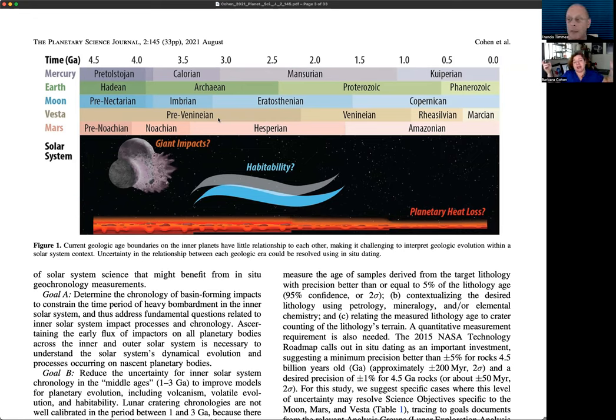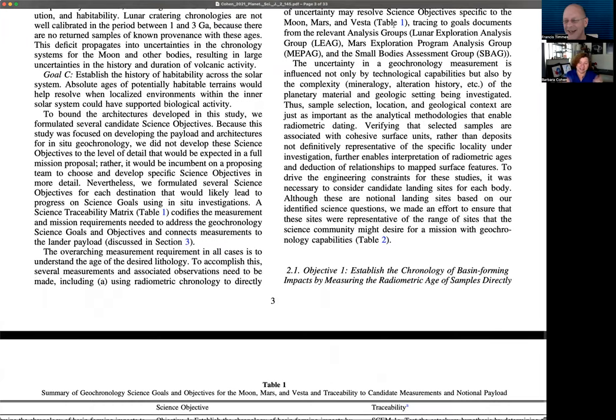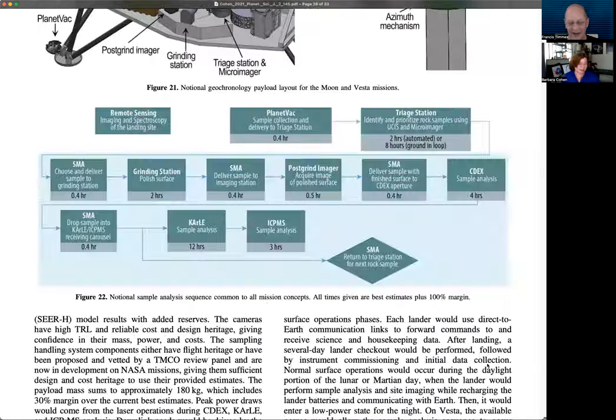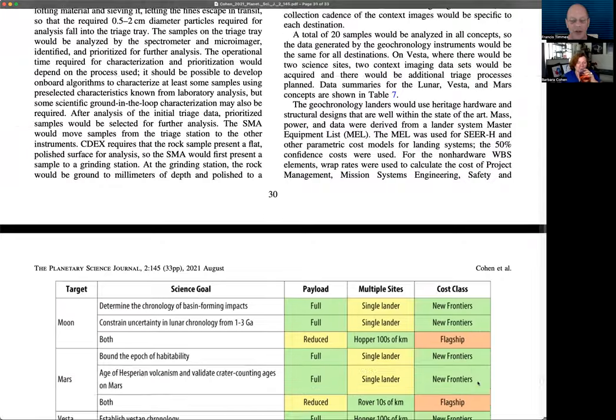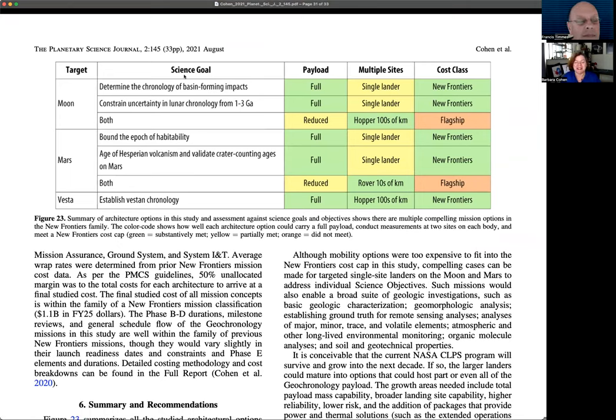If we want to do that and we want to make a mission that goes to the Moon or Mars or Vesta to get some of these ages, that's what the paper is about. What kind of architecture do you need? What kind of instrument? What kind of precision does it need? Where would you go to do this? What kind of terrain would you pick? How would you actually land there? What does the spacecraft look like? And then crucially to the decadal survey, how much would it cost?